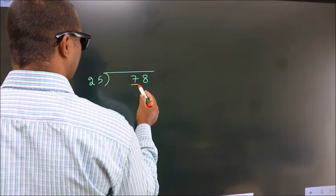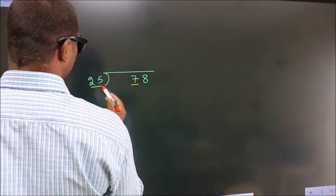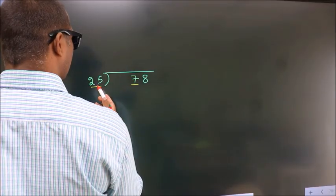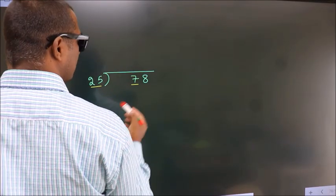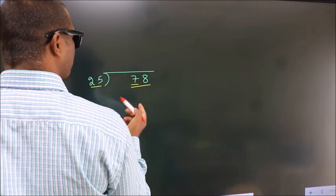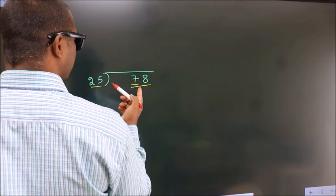Here we have 7. Here 25. 7 is smaller than 25, so we take two numbers: 78. A number close to 78.